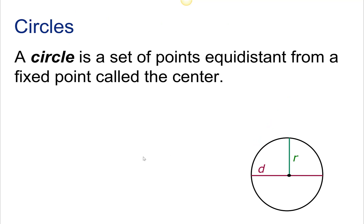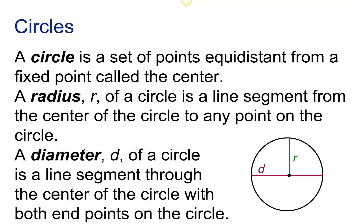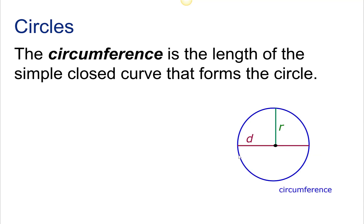A circle is a set of points equidistant from a fixed point, which is called the center. The distance from the center to any point on the edge of the circle is called the radius. The diameter goes from one side of the circle to the other side through the center, and the diameter is twice the radius. The circumference is the length of the simple curve that forms the circle, like the perimeter. It's a special word for the perimeter of a circle, and it's equal to 2 pi r. The area of the circle is pi r squared.